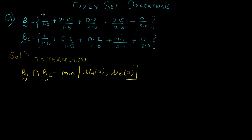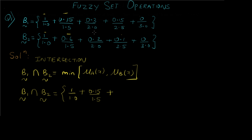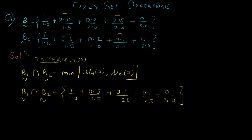The comparison is similar to union, except we take the minimum of the two. For the intersection result: we compare the first terms — the minimum of 1 and 1 is 1, so it is 1/1.0. The minimum of the next terms gives 0.15/1.15. For the fourth term it is 0.15, and for the last term it is 0.15. This is the intersection formula and this is how we calculate intersection between two fuzzy sets.